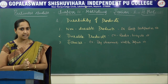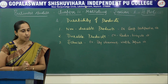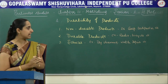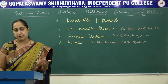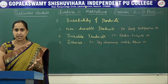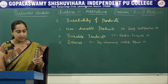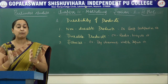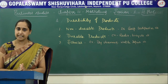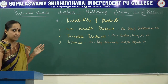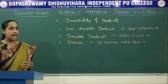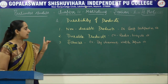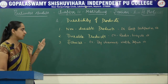Next is durable products. Durable products means products we use again and again. For example, radio, refrigerator, television, bicycle and kitchen gadgets — we use these products again and again, so we call them durable products. For durable products, it requires personal selling and a few advertisements, and guarantee and warranty is also needed. After-sale service is also required.